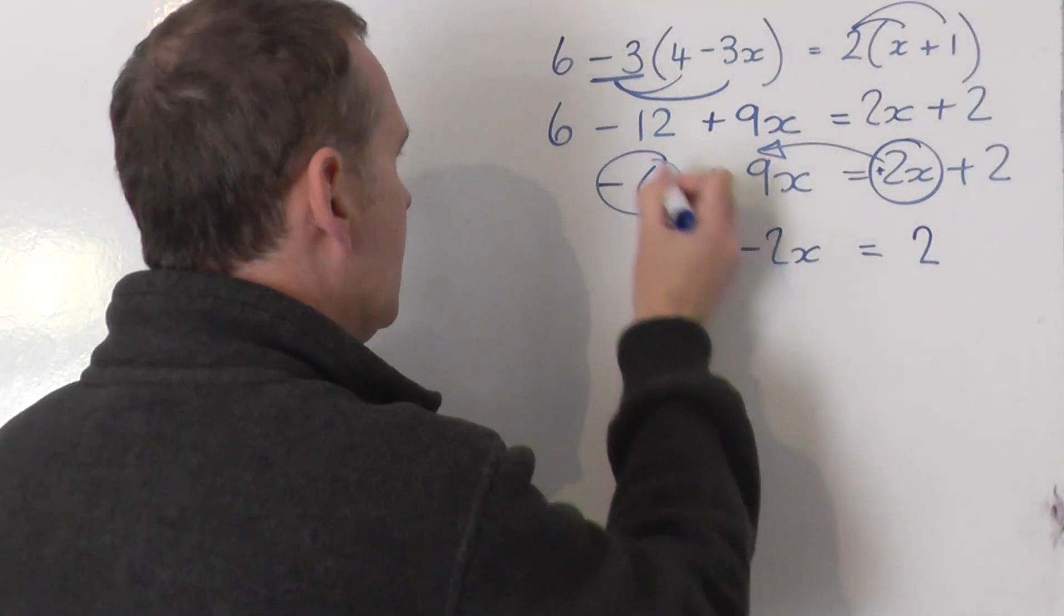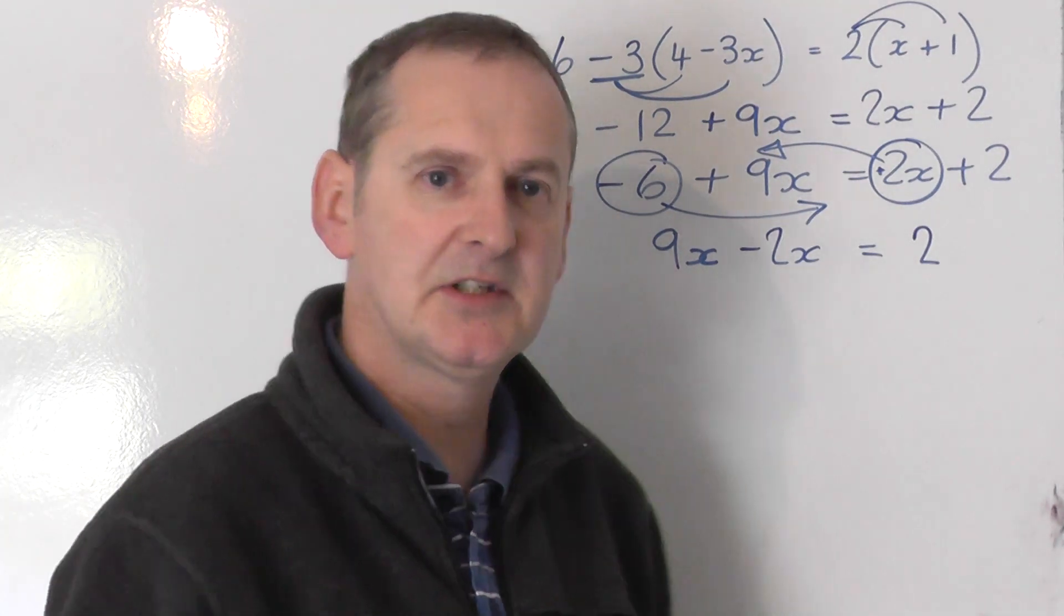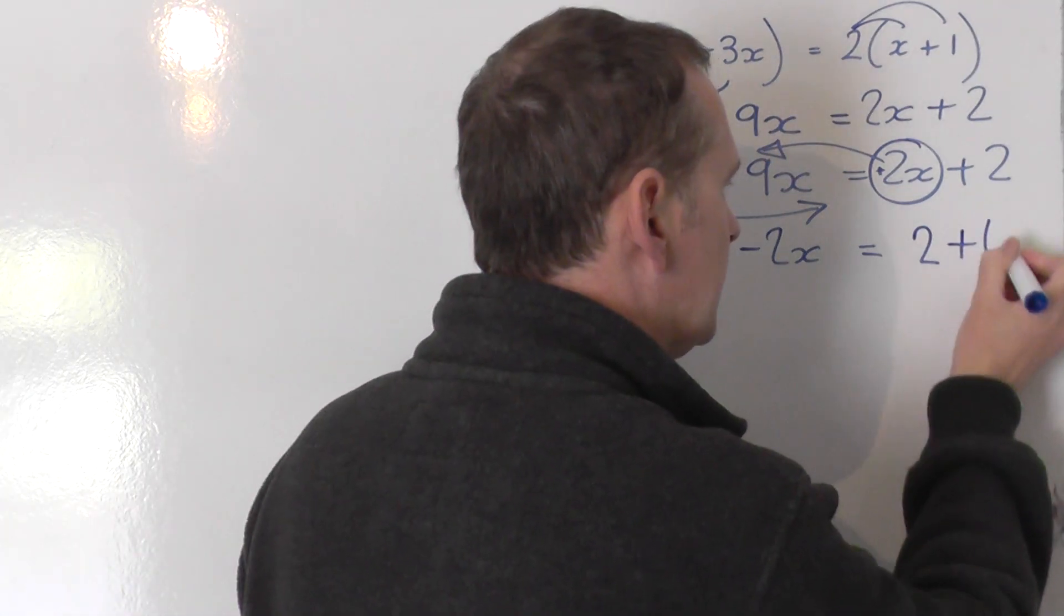I now take the minus 6 and I drag that to the other side to join it. Minus 6 swaps sides, it becomes plus 6.